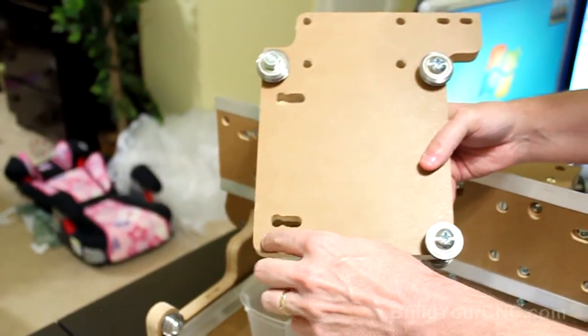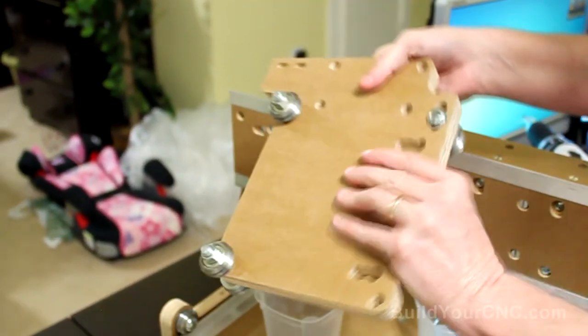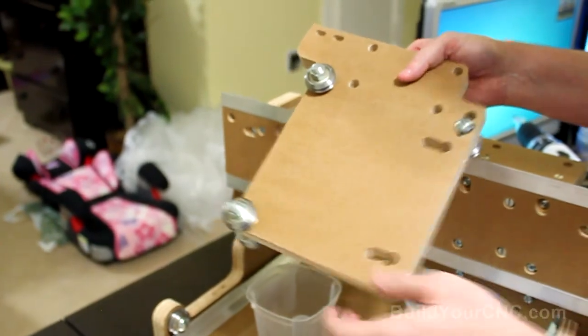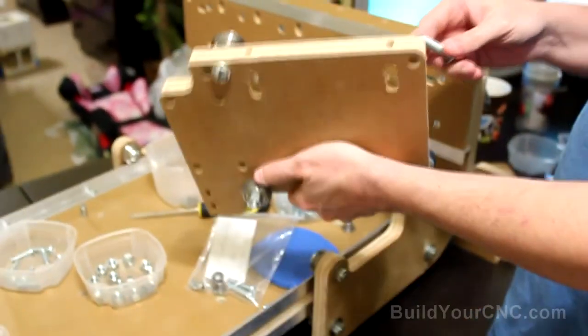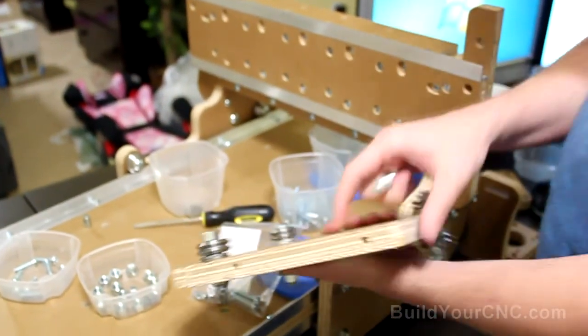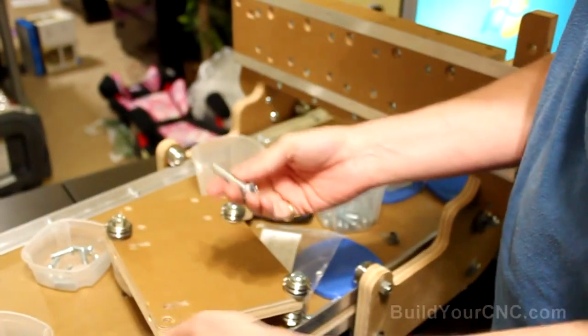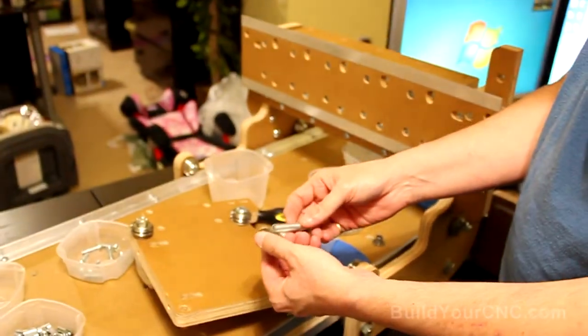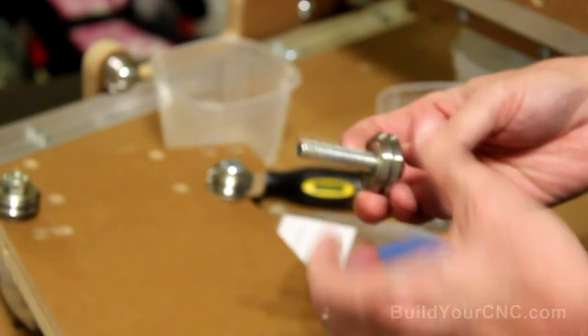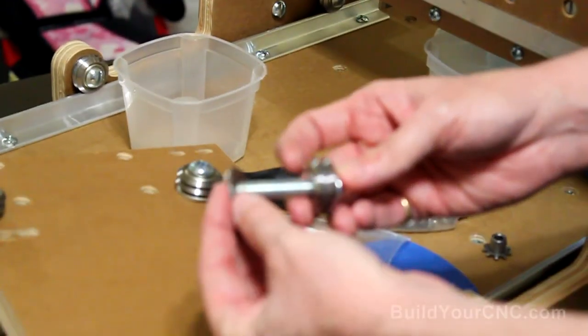We need one here, one here for the Y axis. And then these two on the other side would be for the Z axis. So let's put the Y axis in. Okay, we'll put in the last Y axis bearing. We'll take a one and three-quarter inch, three-eighths inch screw. Put on a bearing. We'll need two of these washers.